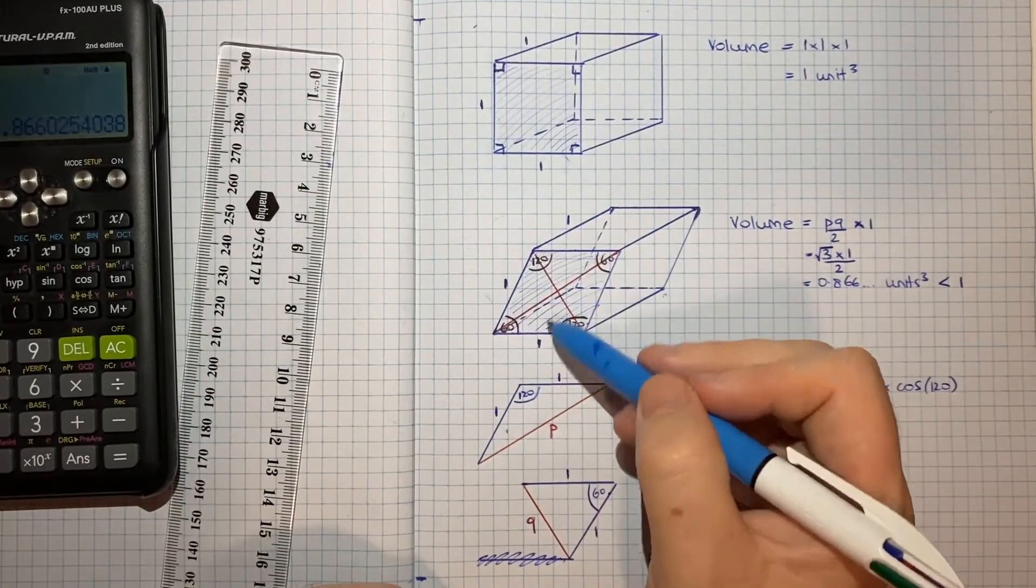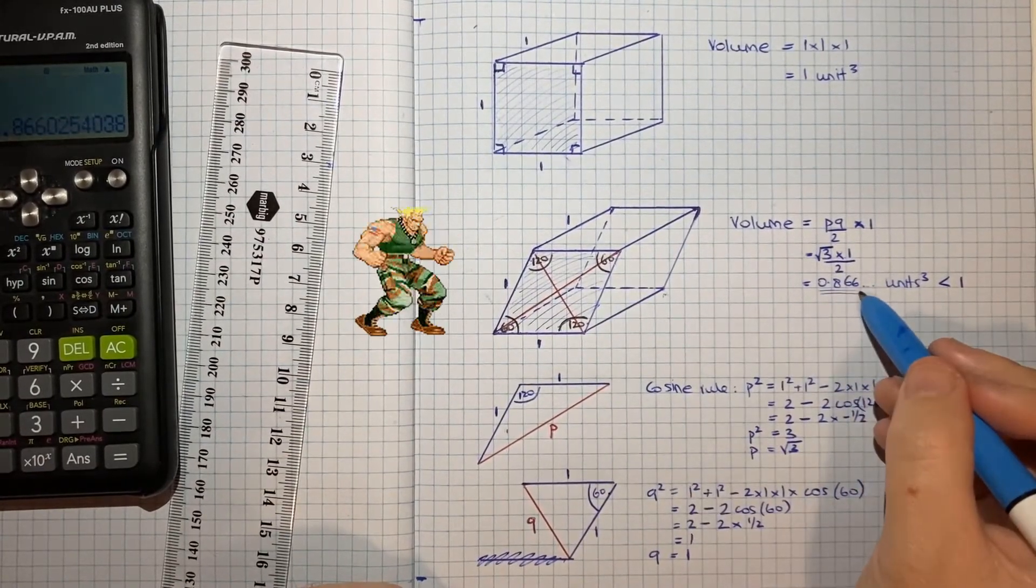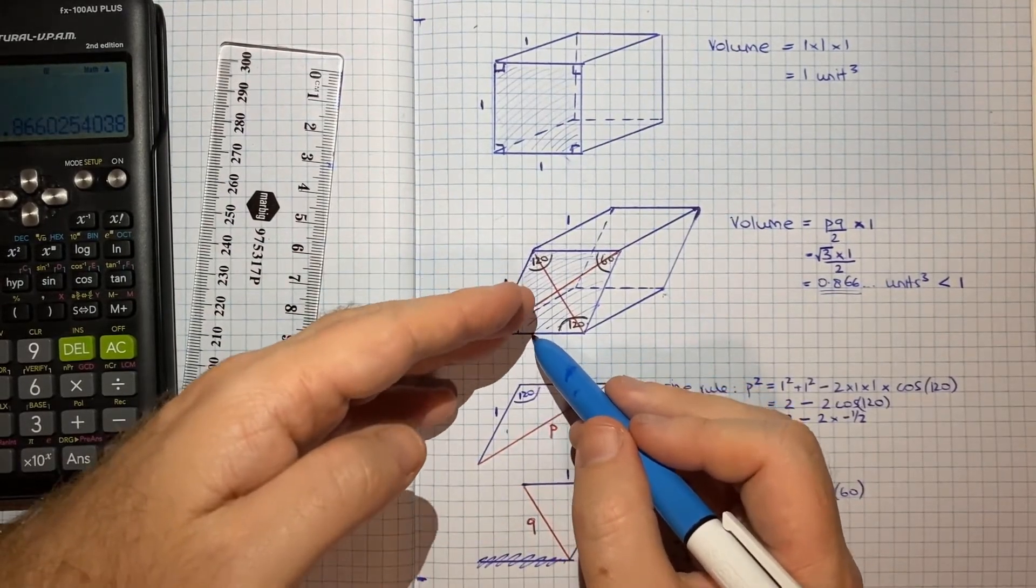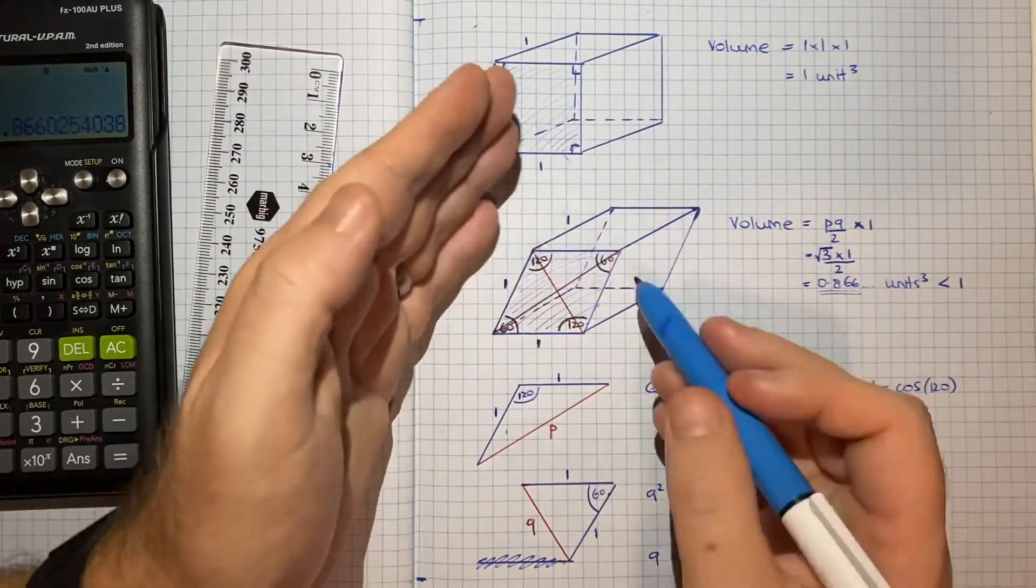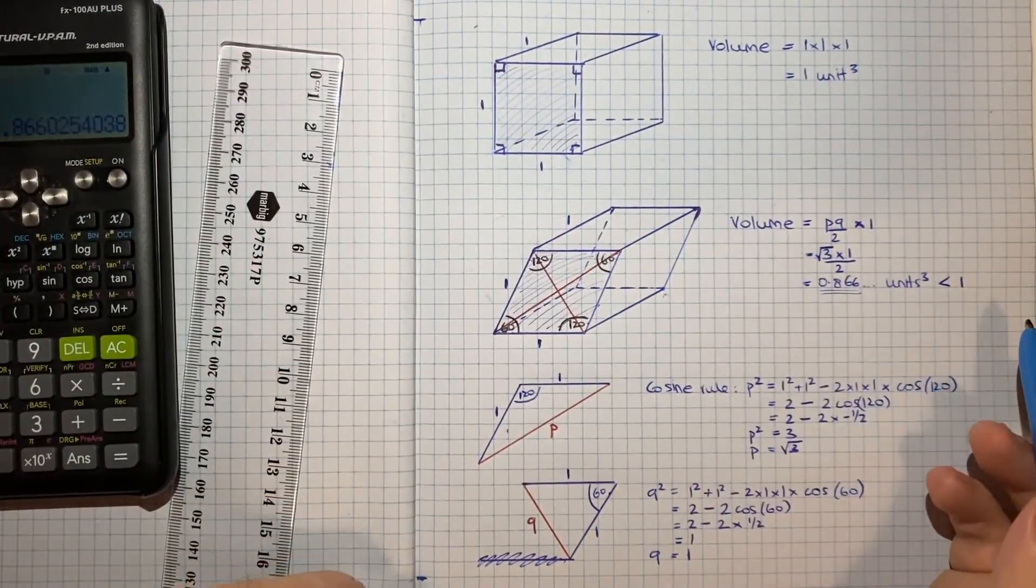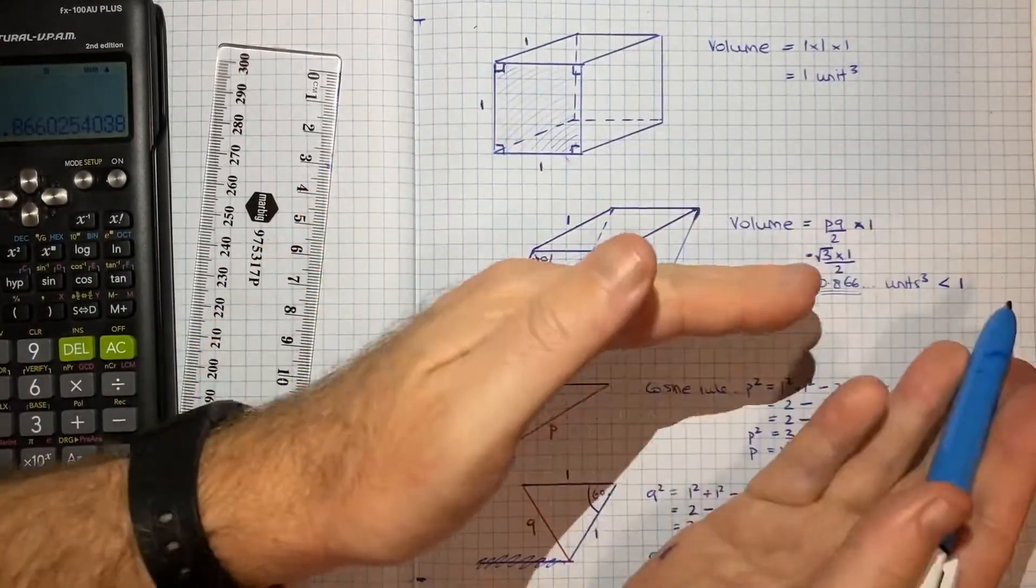So we see that through simply having a smaller angle, through shifting the angle, if we keep the length the same, then our volume has decreased. And we'll see if we keep making that angle smaller and smaller until eventually it's nothing, the volume, in theory, would keep getting towards zero. Because you'd end up with just a flat line.